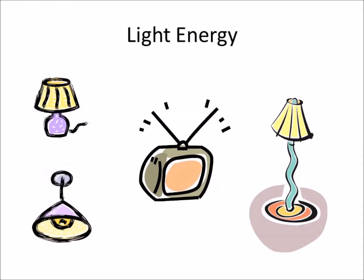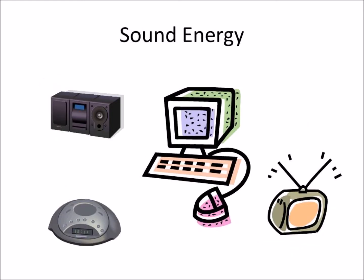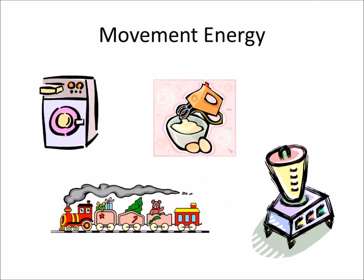The TV and the lamp transform electricity into light energy. The computer, the TV, the radio and the alarm clock transform electricity into sound energy. The washing machine, the mixer and some toys transform electricity into movement energy.